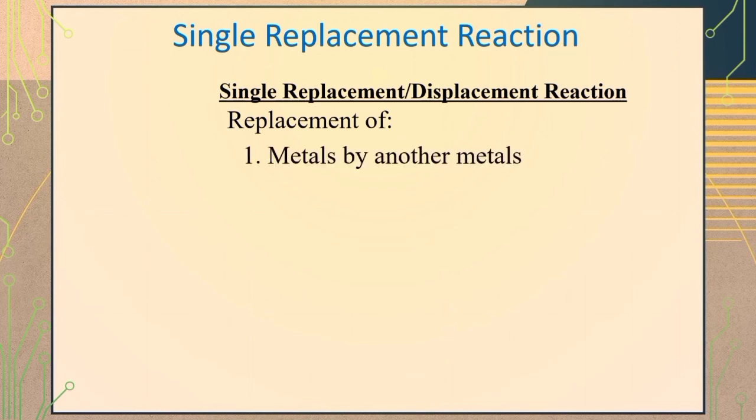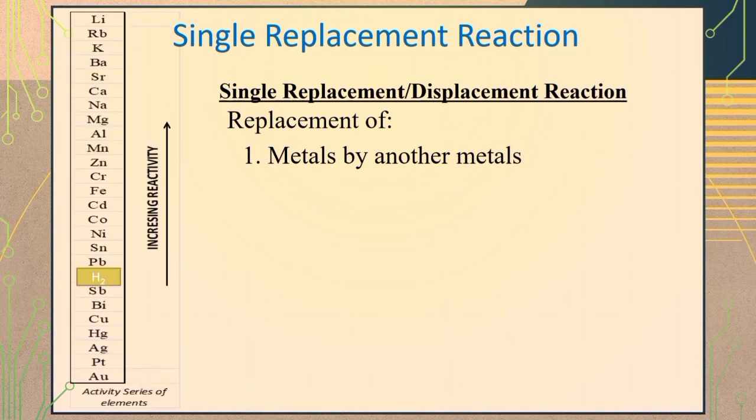For instance, a more active metal can replace a less active one in a compound. The relative reactivities of several metals are organized in an activity series in such a way that it becomes convenient to determine which between a pair of metals is more active.